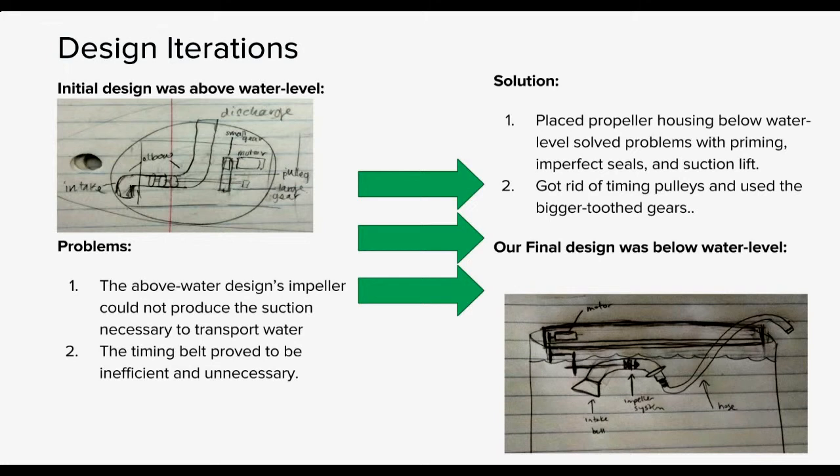And so finally, we realized that our impeller system and pump itself needed to be submerged underwater. So we flipped our entire design over. We placed only the motor on top of the frame above the water, and then we used gears to drive the impeller system, which was under the water. And we found that it only worked when it was completely submerged and that there was water in the housing all the way to the top, that there was no air in the housing system. And so that was our solution to place the propeller housing below water level.